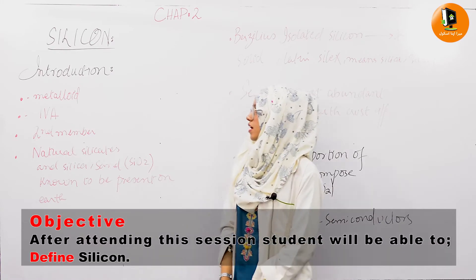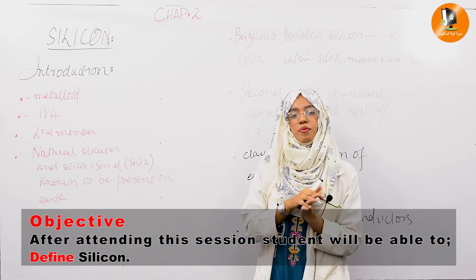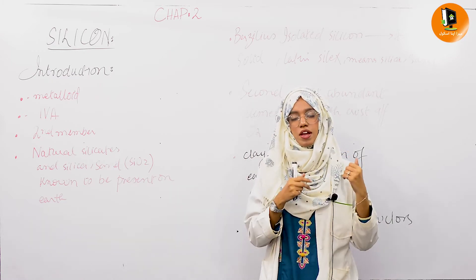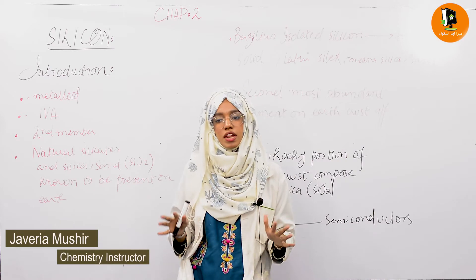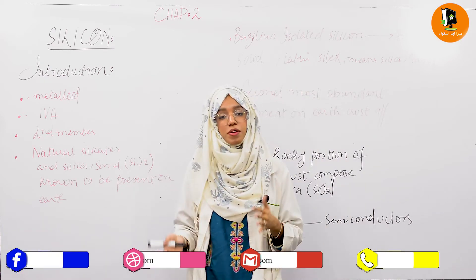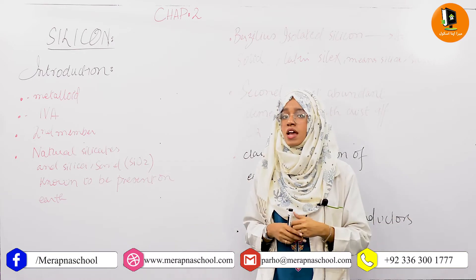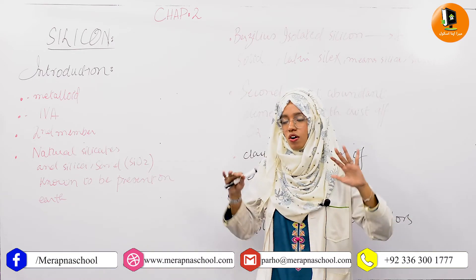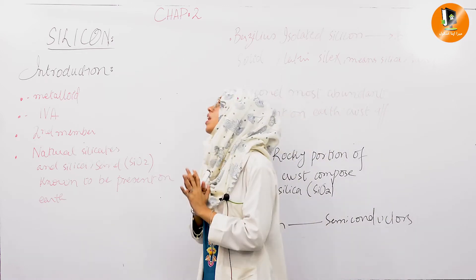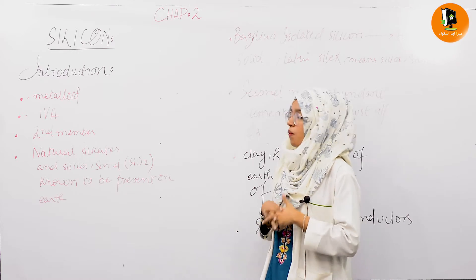Now moving towards silicon. As the name of the chapter is 'Carbon, Silicon and Their Compounds,' we have covered the portion of carbon — its allotropes, physical properties, chemical properties, uses, and basic introduction. We have covered all the aspects of carbon that one must know about. Now moving towards another element, which is silicon.